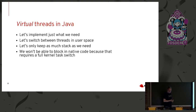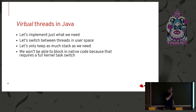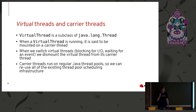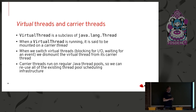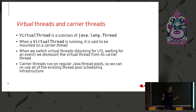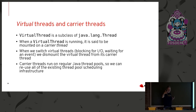Let's implement just what we need. Let's switch between threads in user space. Let's only keep as much stack as we need. We won't be able to block in native code, because that requires a full kernel task switch, but there is a way around this. A virtual thread is now a subclass of java.lang.Thread. When a virtual thread is running, it is mounted on a carrier thread — just a thread out of your usual thread pool. When we switch virtual threads, we have to dismount the virtual thread from its carrier thread.